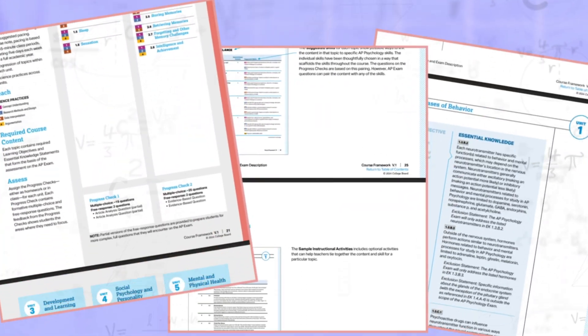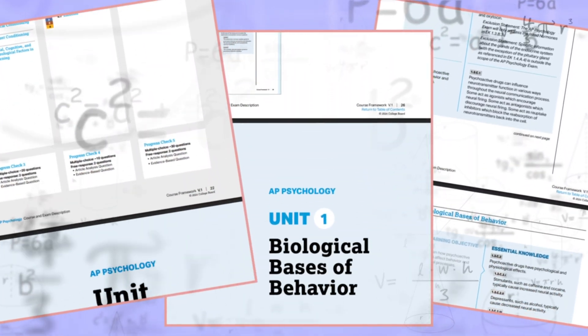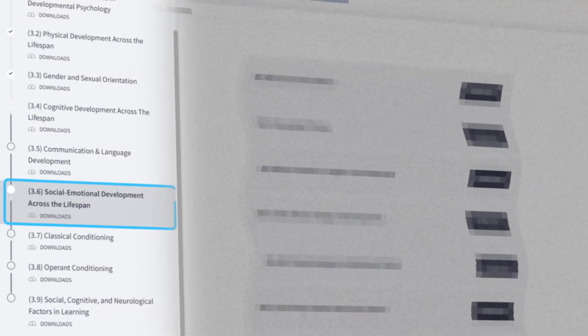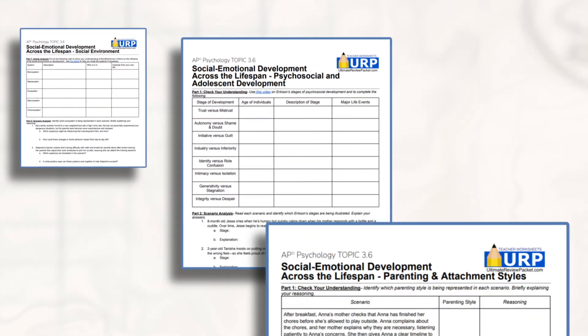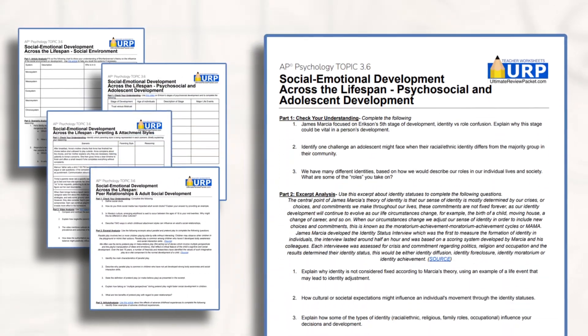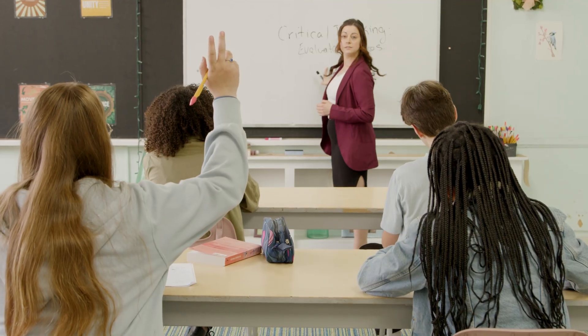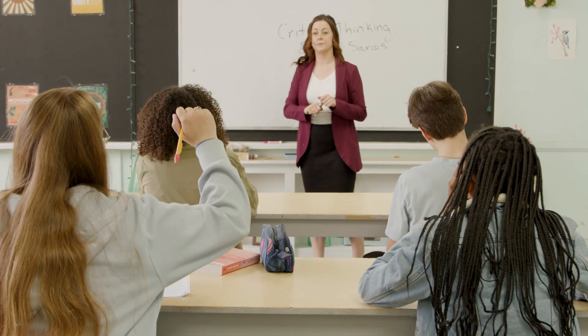When we first started, we set out to create one worksheet for each topic of the CED, but the new CED had just so many topics that are quite large, so we ended up creating multiple worksheets broken down by subtopics for many of the CED topics. For instance, take Unit 3, Topic 6, Social Emotional Development Across the Lifespan. Here, we ended up creating a worksheet for the Ecological System Theory, Eric Erikson's Stages of Development, Parenting and Attachment Styles, Peer and Adult Social Development, and Identity Stages. This way, you as a teacher can focus on the exact topics you are learning in class.